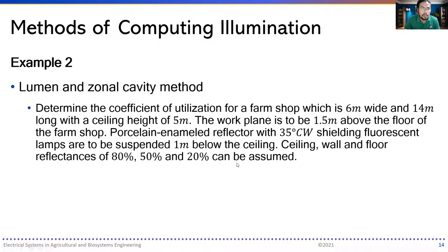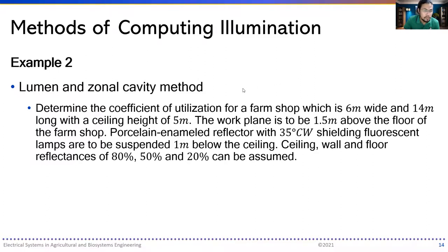Let's look at an example: find the coefficient of utilization for a farm shop that is 6 meters wide and 14 meters long with a ceiling height of 5 meters. The work plane is 1.5 meters above the floor. The luminaire is a porcelain enameled reflector fluorescent lamp with 35-degree CW shielding, suspended 1 meter below the ceiling. The ceiling, wall, and floor reflectances are 80%, 50%, and 20% respectively.